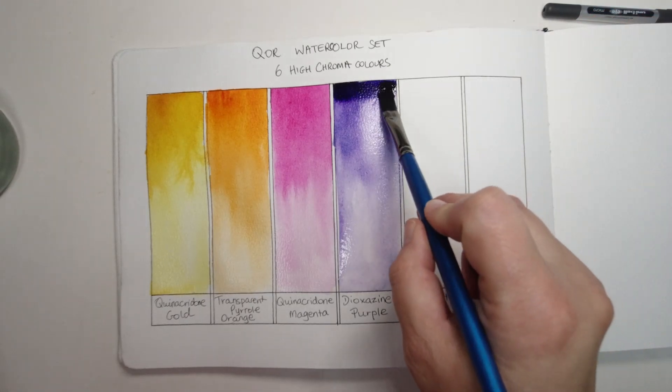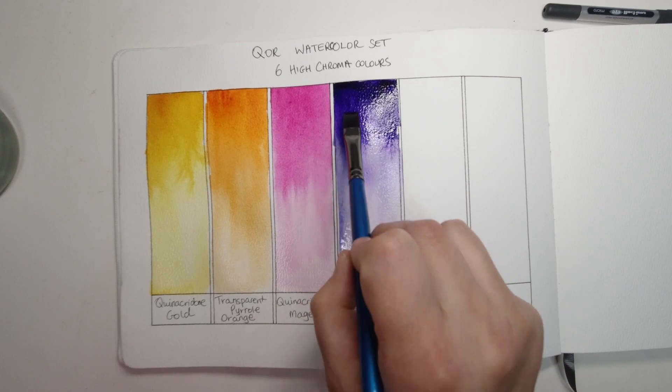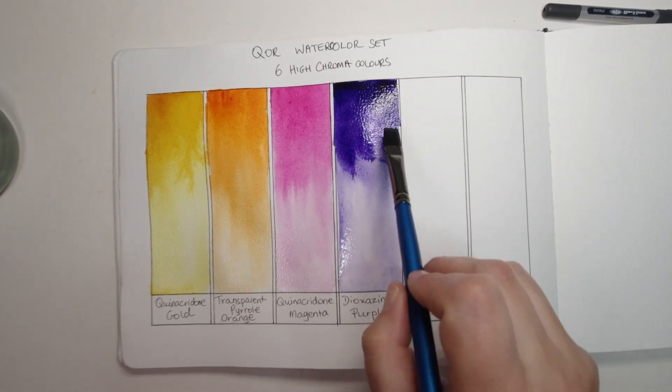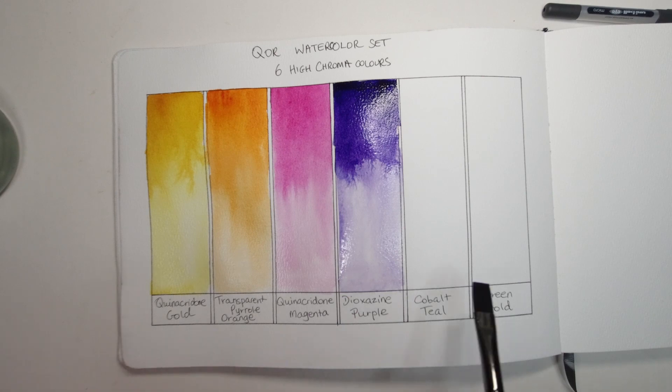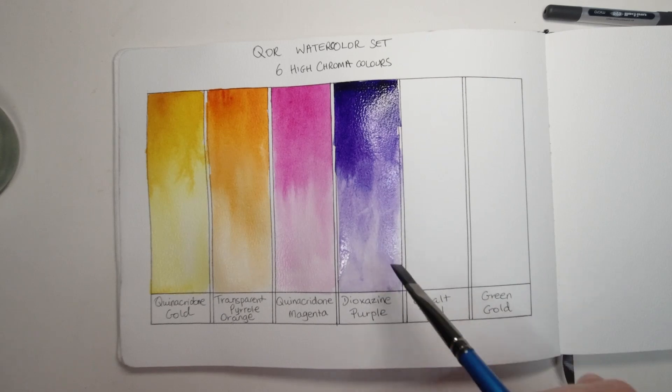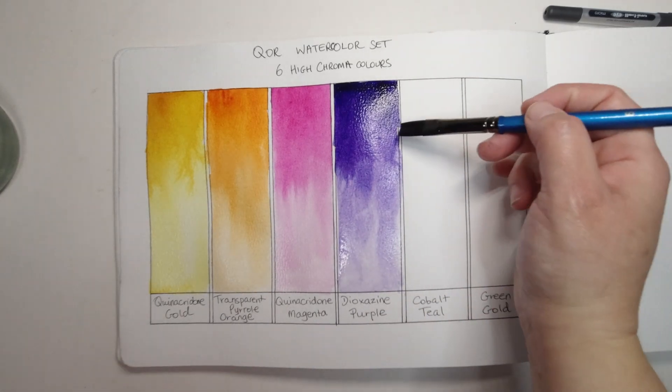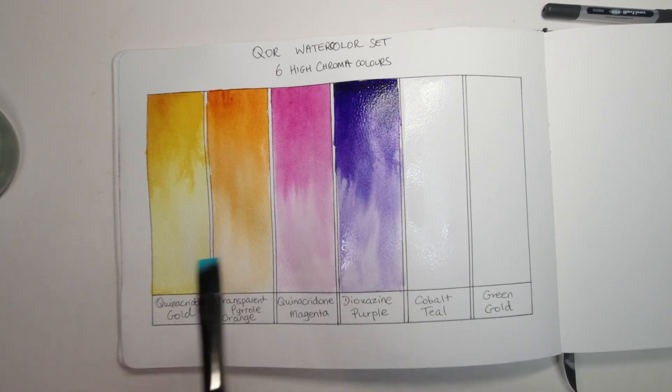Dioxazine purple in many brands can be almost black when it's at its thickest pigment if you will or mass tone. This one I found was a little bit lighter but still a very very rich royal beautiful purple on the cooler side, so a little bit blue, not quite violet in this case. It's also a great color for painting jacaranda trees which are this exact color of purple.